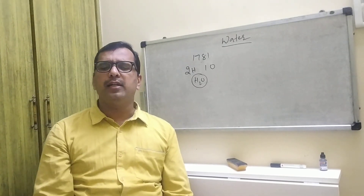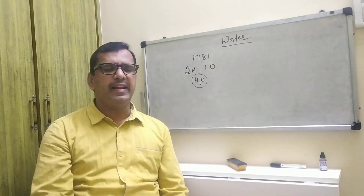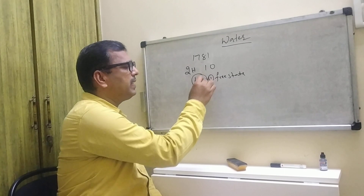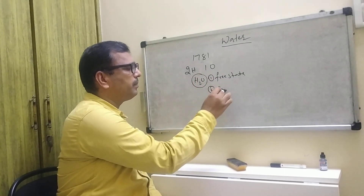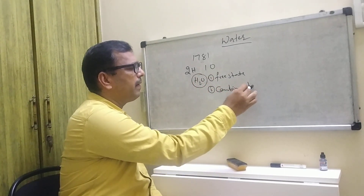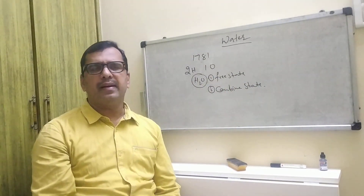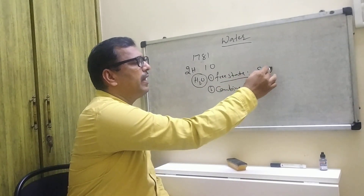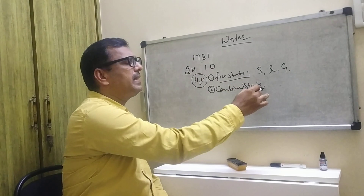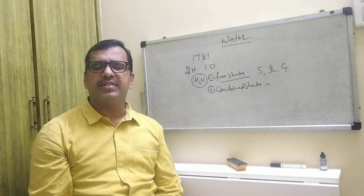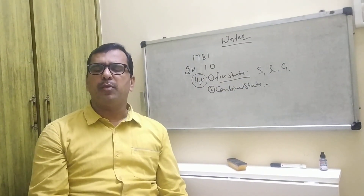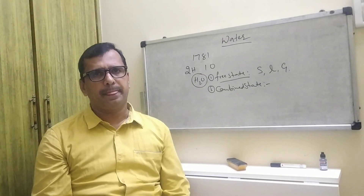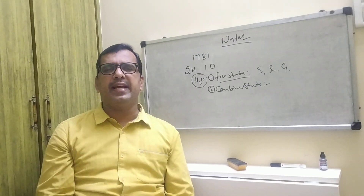Water exists generally in two states: one is the free state and another one is the combined state. In the free state, it exists in the form of solid, liquid, and gaseous states. In the combined state, it exists in the form of water of crystallization, proteins, etc.